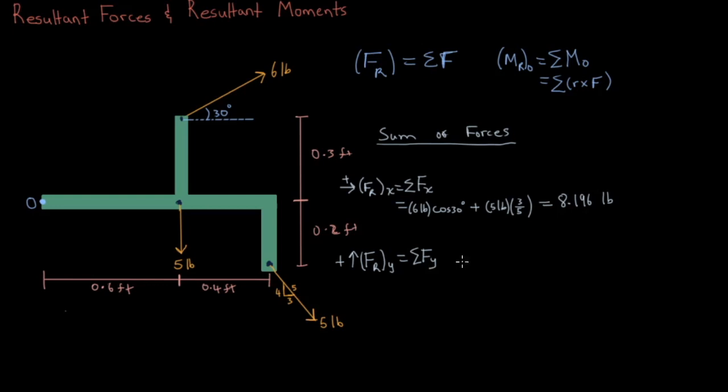We'll do the same thing for the y component. The 6lb force points up, so it will be positive. The 5lb force below that points downward, so it will be negative. And the 5lb force beside that also points down, so it will also be negative. The resultant y force is negative 6, so it points downward.